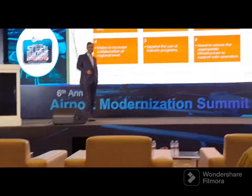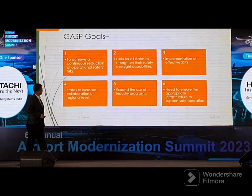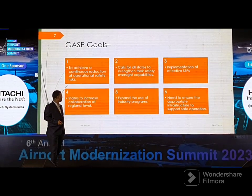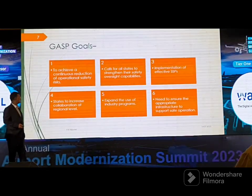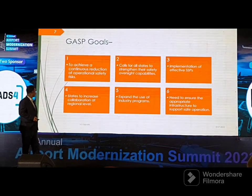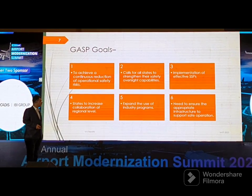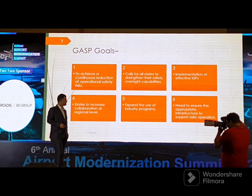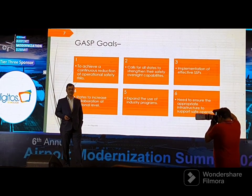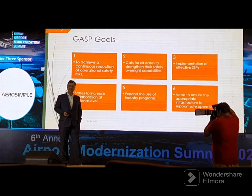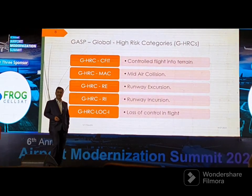The Global Aviation Safety Plan aims to achieve a continuous reduction of operational safety risks. Its objectives include: strengthening state safety oversight capabilities, implementation of effective state safety plans, increasing collaboration at the regional level, expanding the use of industry programs, and ensuring appropriate infrastructure support — whether manpower, equipment, or data structures — to support safe operations.